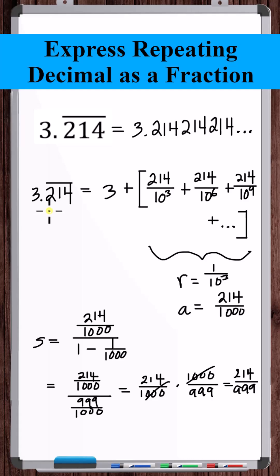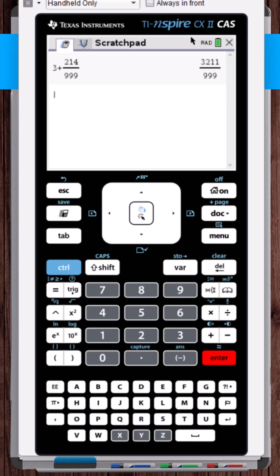So 3.214 repeating is just 3 plus 214 over 999. 3211 over 999.